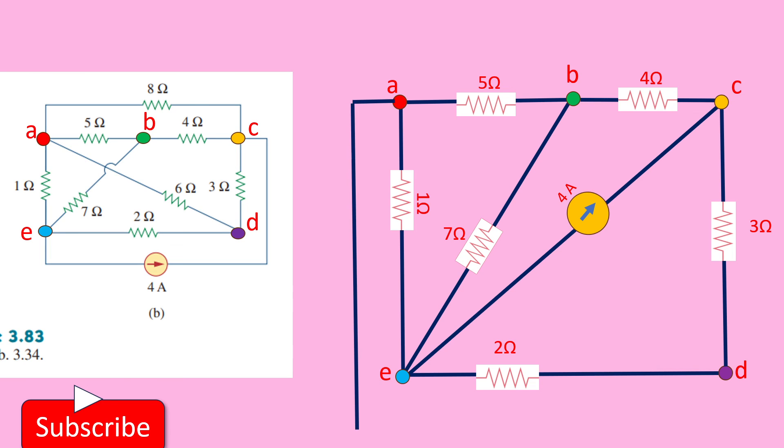So between this A and D, we connect the 6 ohm resistance. Previously, it was inside, which was crossing actually. And between A and C, we have this 8 ohm resistance.